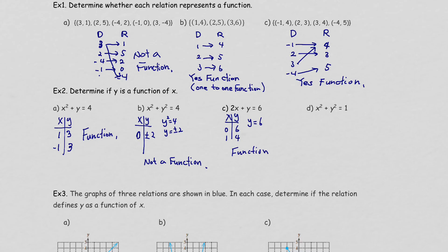For this next equation, let x = 0: you get y² = 1. When you use the square root property, you need to put a ± sign, so it gives you two solutions. Therefore, this is not a function.